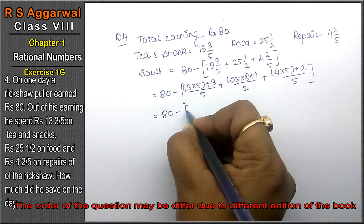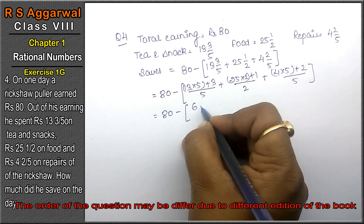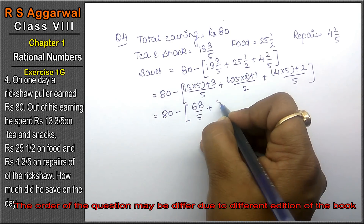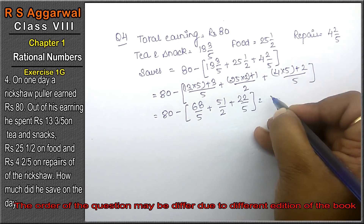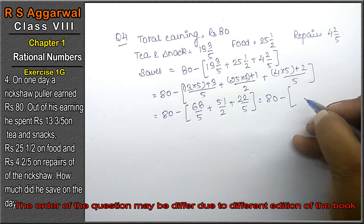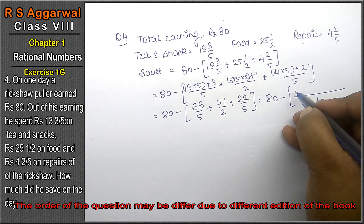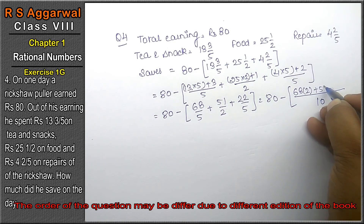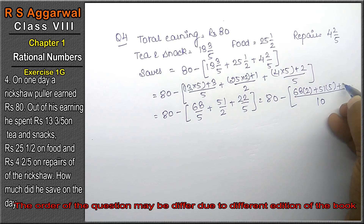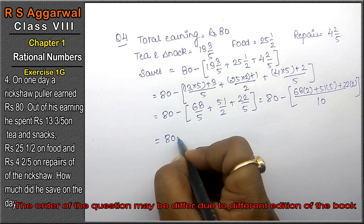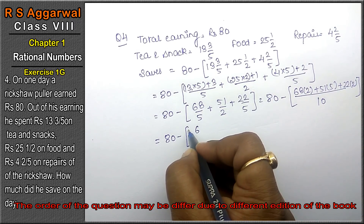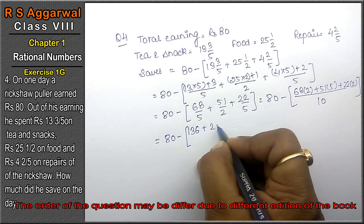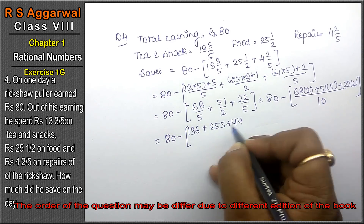So 80 minus (68/5 + 51/2 + 22/5). The LCM of 5 and 2 is 10. So we get 80 minus [(68×2 + 51×5 + 22×2) / 10], which is 80 minus [(136 + 255 + 44) / 10].